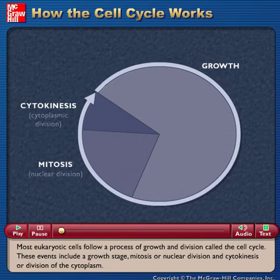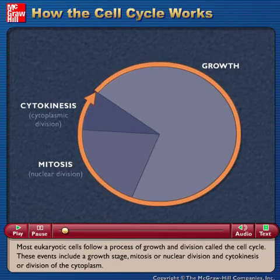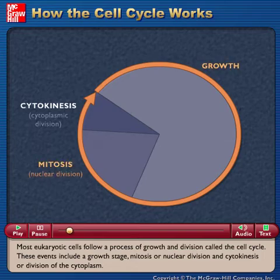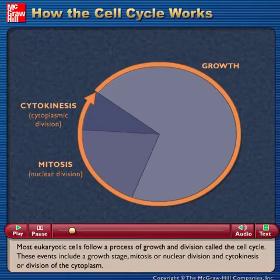Most eukaryotic cells follow a process of growth and division called the cell cycle. These events include a growth stage, mitosis or nuclear division, and cytokinesis or division of the cytoplasm.